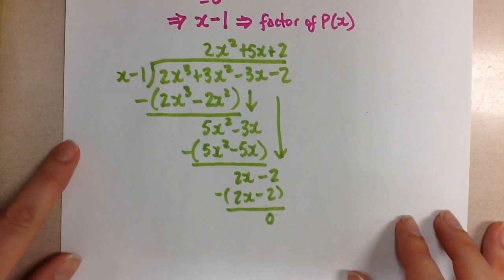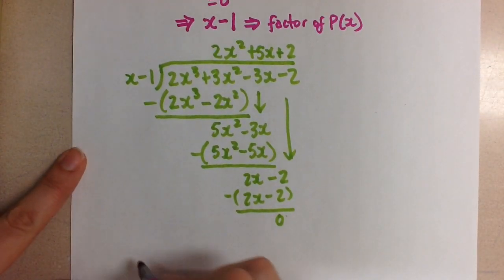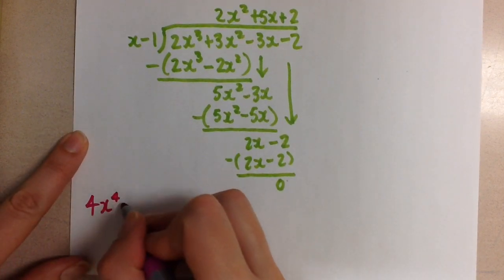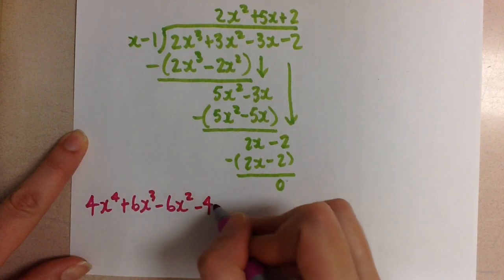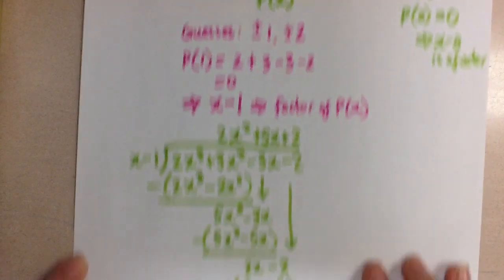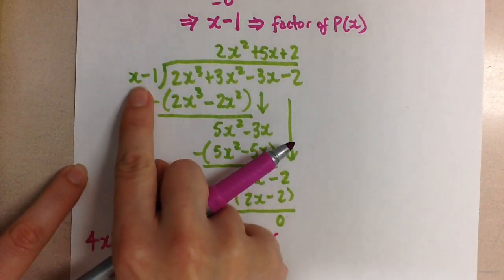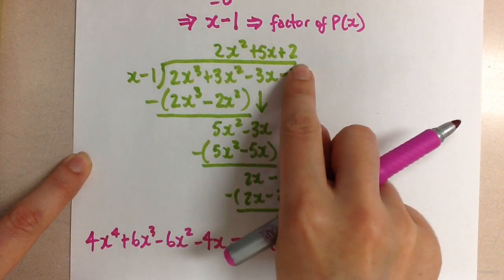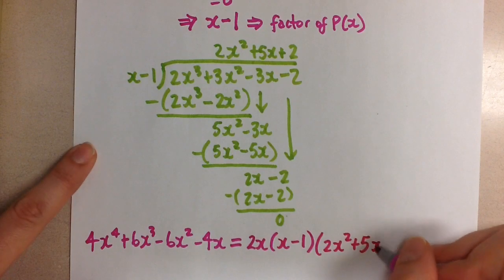So now, the original polynomial we had, 4x to the 4 plus 6x cubed minus 6x squared minus 4x, is going to be equal to - well, we had that very first factor that we common factored out, so we have to include that one. 2x times, now we have this factor that we found, the x minus 1, times the quotient that we got, 2x squared plus 5x plus 2.